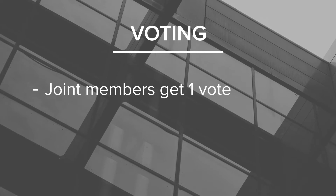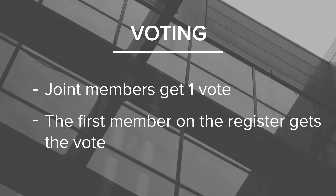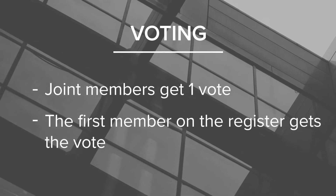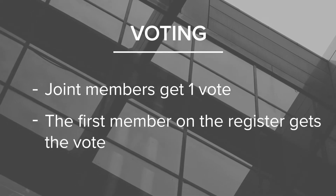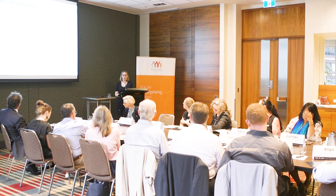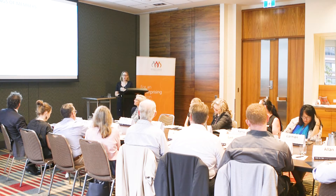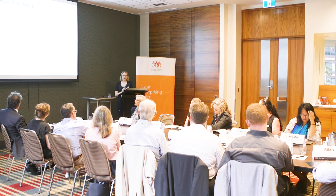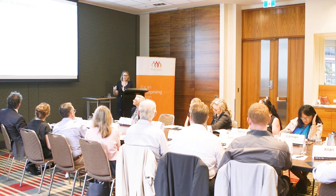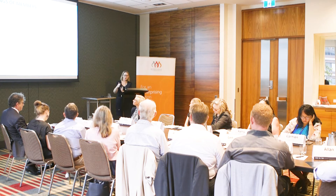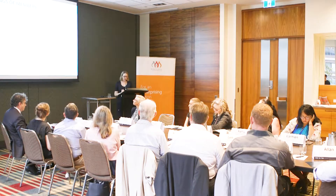The model rules say that generally it's the first person entered into the register who has the right to exercise the vote, but you can change that under your model rules. The person who has the right to vote can always exercise a proxy so that the other joint member can vote.